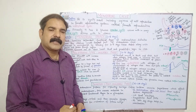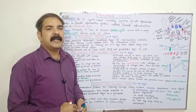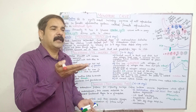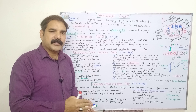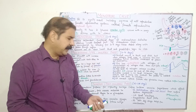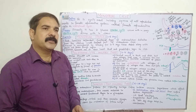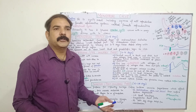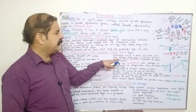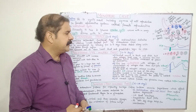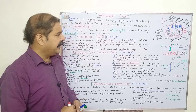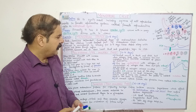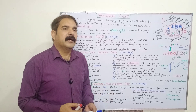FSH stimulates the Graafian follicle to release estrogen. FSH and estrogen have a negative feedback relationship: when FSH rises, estrogen decreases, and when FSH falls, estrogen rises. Estrogen vascularizes and glandularizes the uterine wall, preparing the uterus for the incoming embryo. The cervical mucus, which is normally thick and sticky, becomes thin and crystalline when estrogen levels rise, facilitating sperm movement and fertilization.